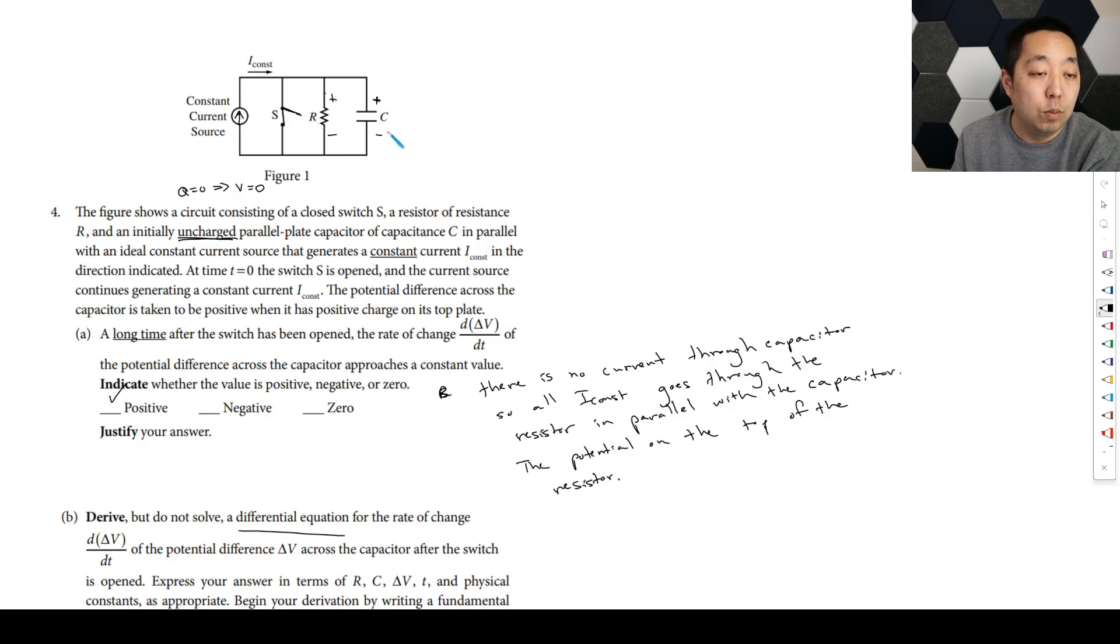Well, what we have is the current coming in, and it's going to split into two branches, right? So this is going to have the current on the capacitor. And you're going to have it and you want something for the potential difference. We know that the current through a capacitor, so this is the current through the resistor, is current through the capacitor. We know by Kirchhoff's current law, that once you open this, the current is I const, it must split into these two branches. So you're going to have I constant is going to equal the current through the resistor plus the current through the capacitor.